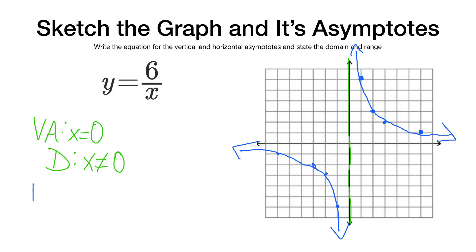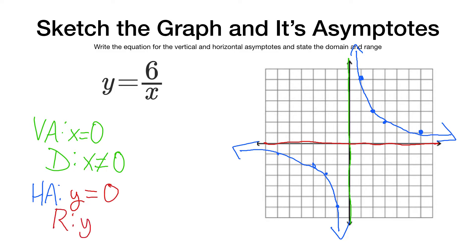Our horizontal asymptote would also be y equals 0. You might say it's now 6 times bigger — but think about it: 6 out of a billion is not much better than 1 out of a billion. Your chances are still basically nothing. So as x gets bigger, y gets closer to 0. Our range is y cannot equal 0.